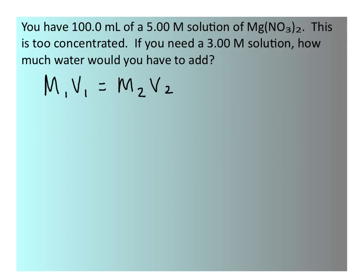So for the molarity of the original solution, we have 5 molar, and the volume is 100 milliliters. It's actually okay to leave your volume in milliliters for this calculation. We know we want to make a 3 molar solution.